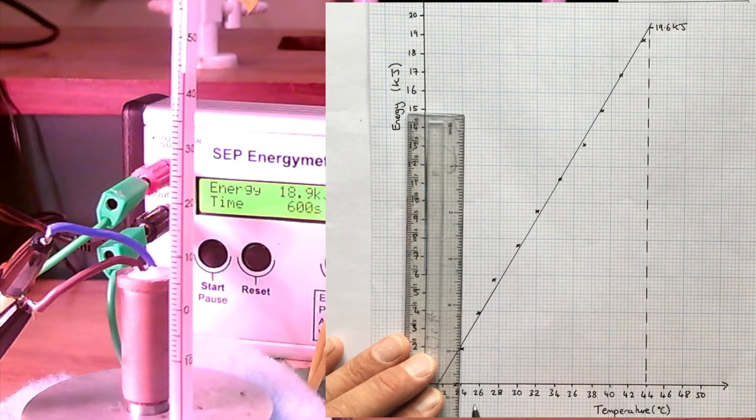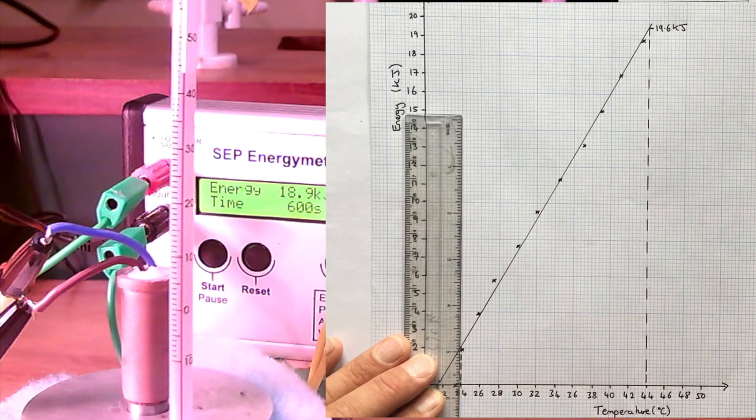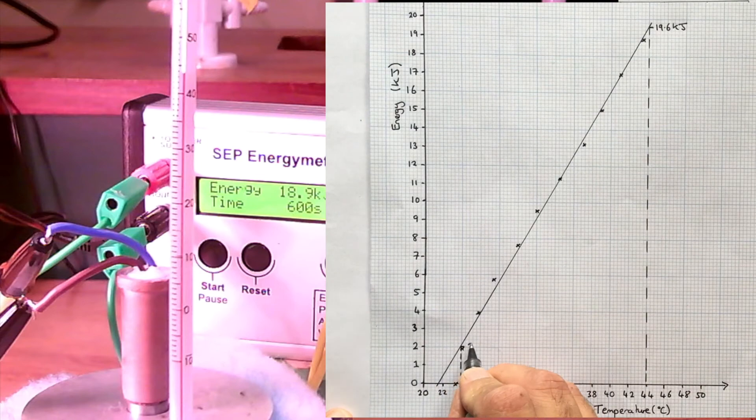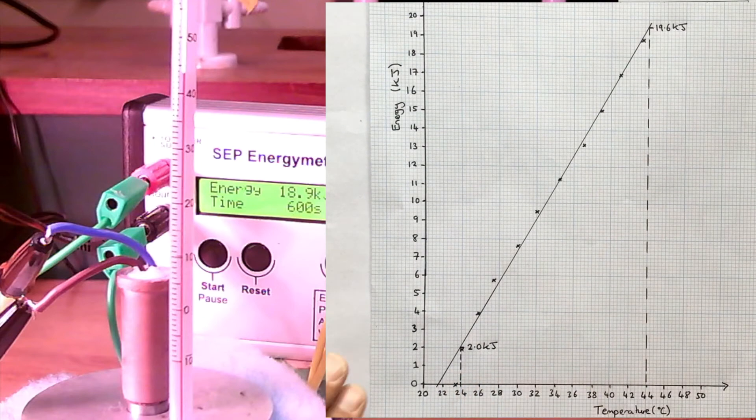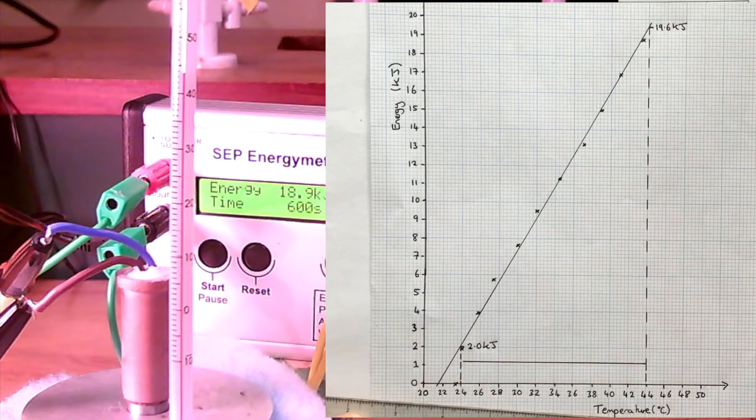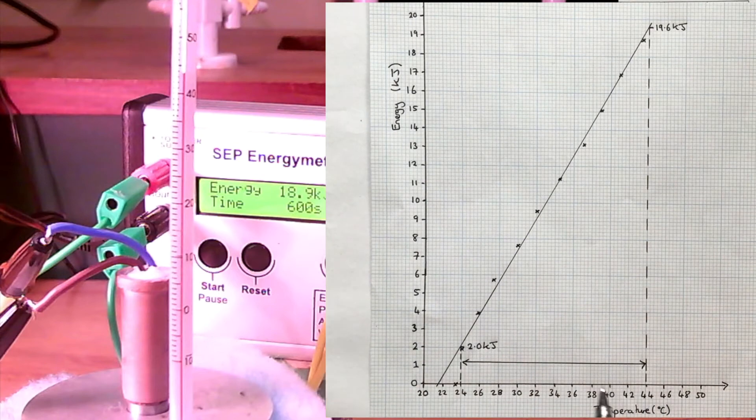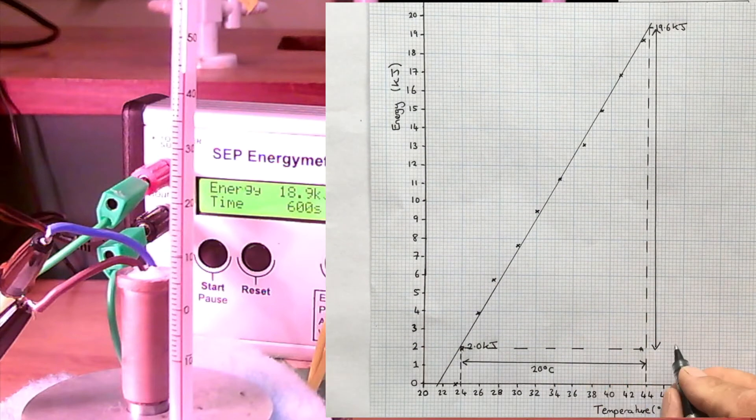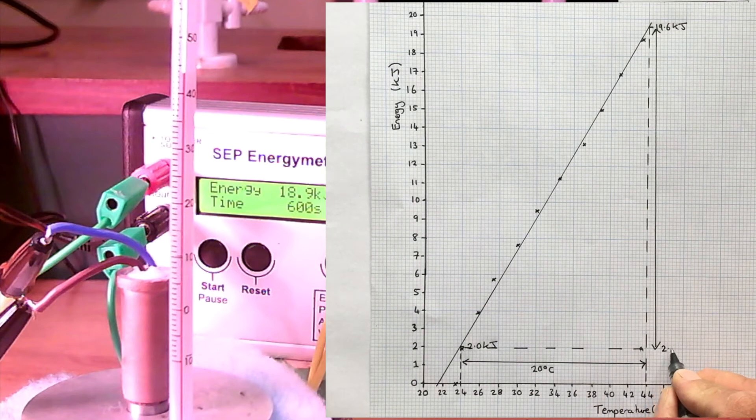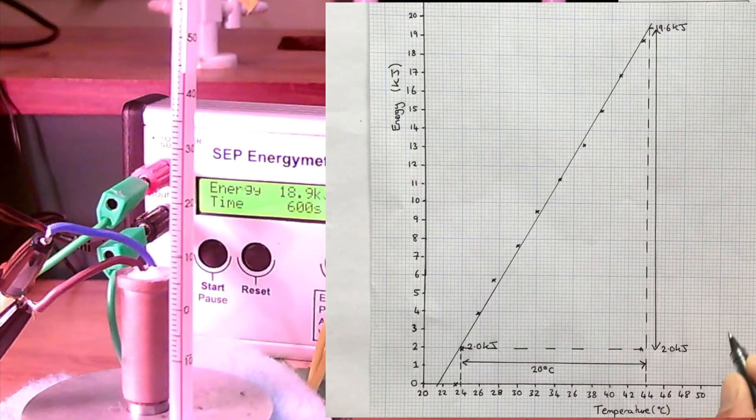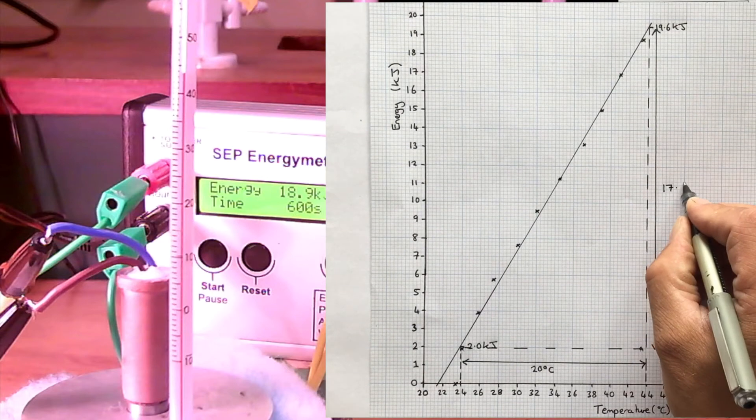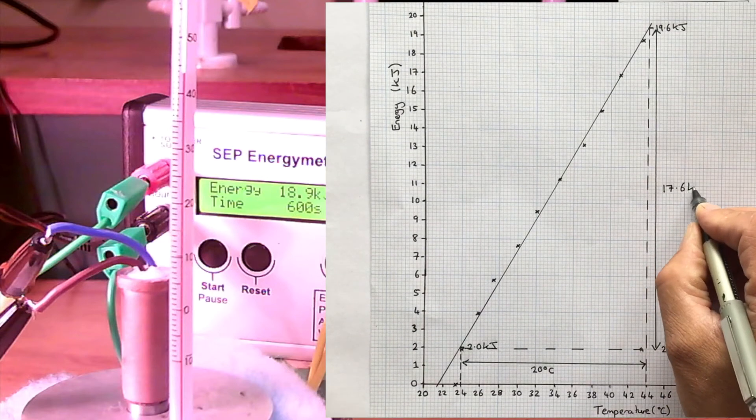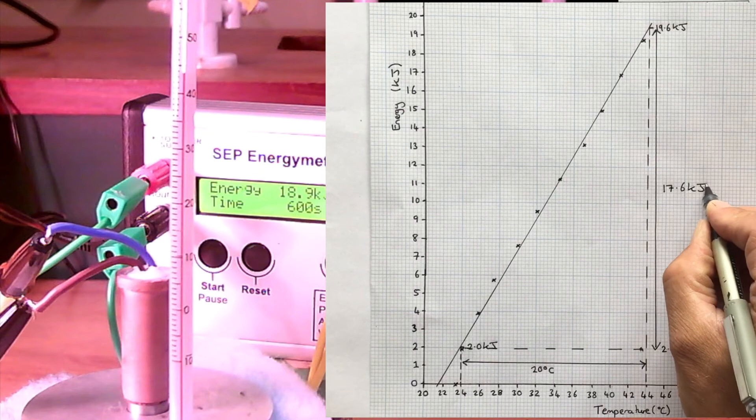So I'm now going to choose another temperature, which I'm going to use 44 degrees. And at this temperature, the energy was exactly 2 kilojoules. So we've got a change in temperature of 20 degrees. So in this 20 degree change, the energy goes from 2 kilojoules up to 29.6 kilojoules. So this means a change in energy of 17.6 kilojoules.